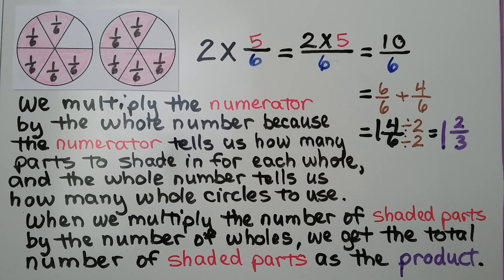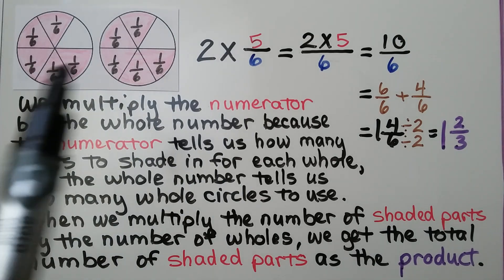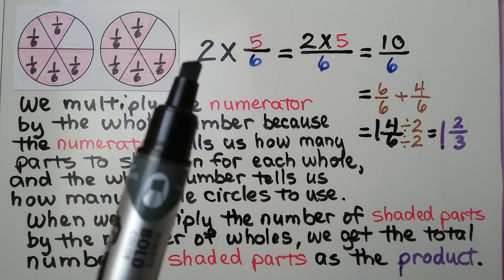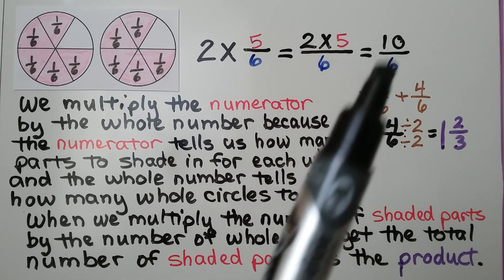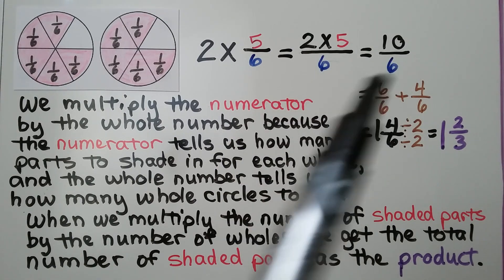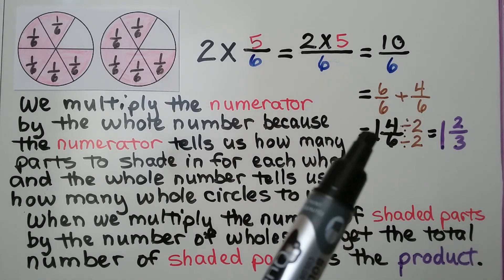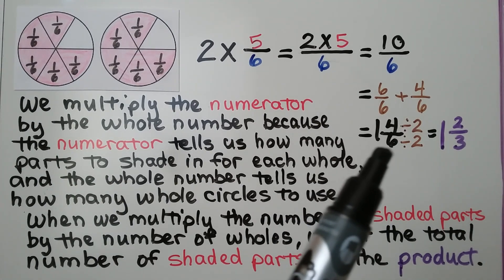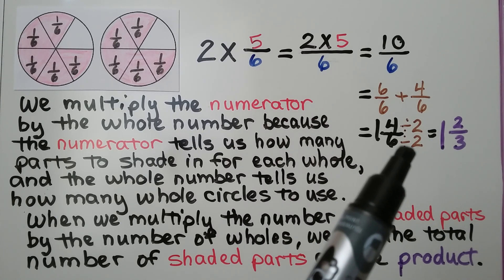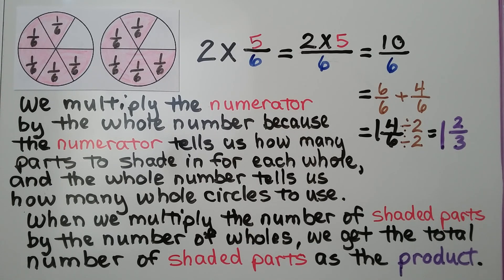Here we have 2 times 5 sixths — we have 5 sixths two times. We multiply the whole number by the numerator: 2 times 5 is 10. We use the denominator 6, we have 10 sixths. That's equal to 6 sixths plus 4 sixths, which is 1 and 4 sixths. We can write it in simplest form by dividing the numerator and denominator by a common factor. We have 1 and 2 thirds.